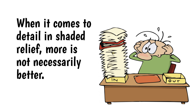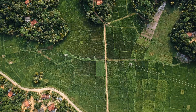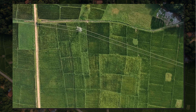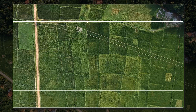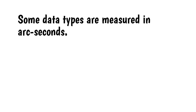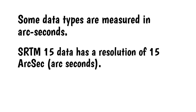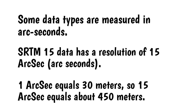When it comes to detail and shaded relief, more is not necessarily better. For example, 30 meter data was sampled every 30 meters along the ground. Think of the ground as a large photograph where each pixel is 30 meters across and down. The elevation values inside that 30 meter block are averaged together to produce a single elevation value for the block. 90 meter data is sampled every 90 meters, so it has a lower resolution than the 30 meter data, meaning it's not as detailed. Some data types are measured in arc seconds — for example, SRTM15 data has a resolution of 15 arc seconds. One arc second equals 30 meters, so 15 arc seconds equals about 450 meters.